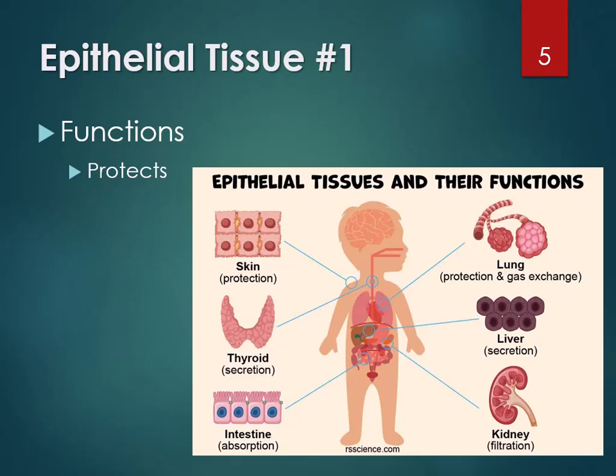Epithelial tissue also absorbs things — the stomach absorbs alcohol, for example, and the small intestines absorb nutrients. Epithelial tissue is that layer between everything else and whatever's in the space, because it always lines hollow organs and tubes. It also acts as a filter — kidney tubule cells filter what you want to keep versus what waste to remove in urine. Some of these tissues also secrete things, like stomach epithelial tissue secreting acid and enzymes to help break up food.